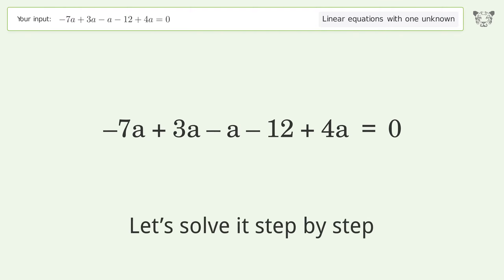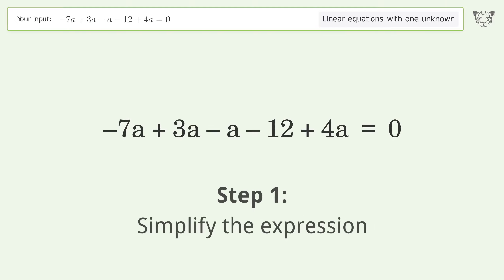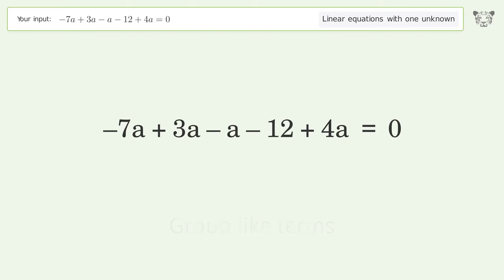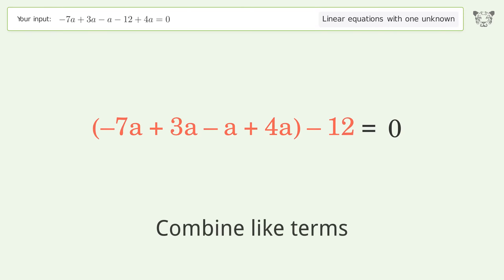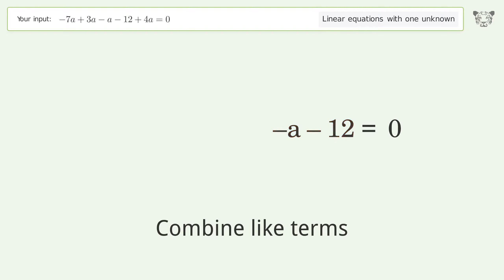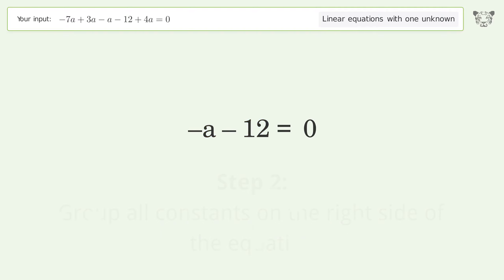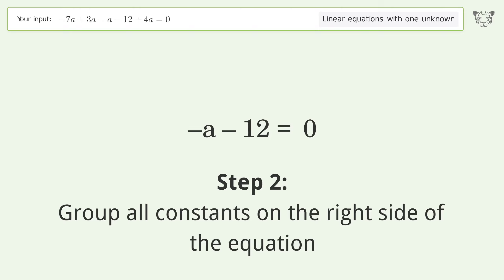Let's solve it step by step. First, simplify the expression, then group like terms, combine like terms, and group all constants on the right side of the equation.